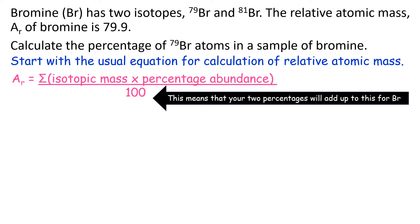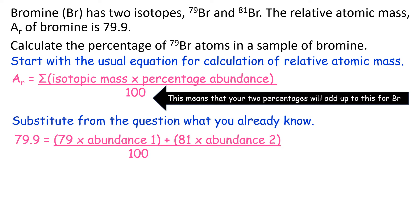What the 100 means is that your two percentages, because there's two isotopes, will add up to this for Br. So now take what you already know from the question and substitute it into that expression.